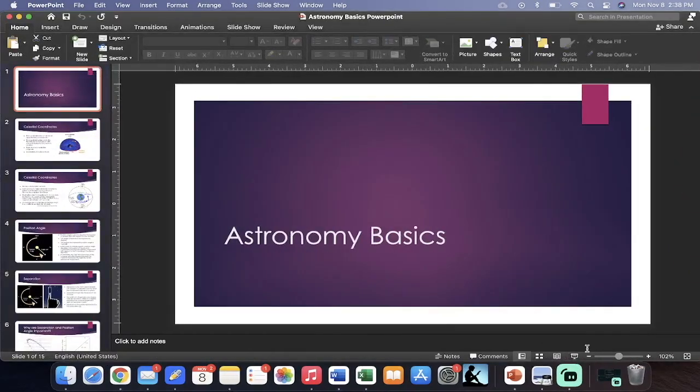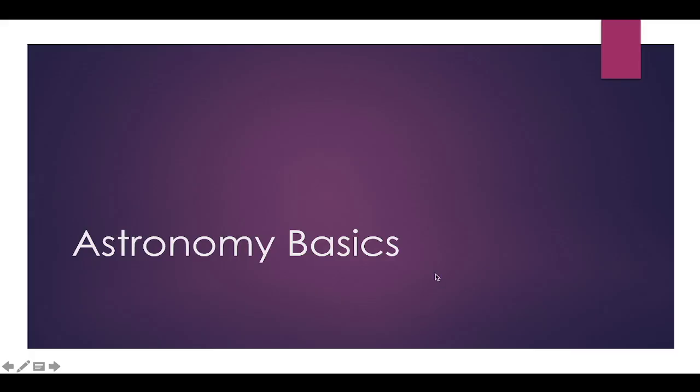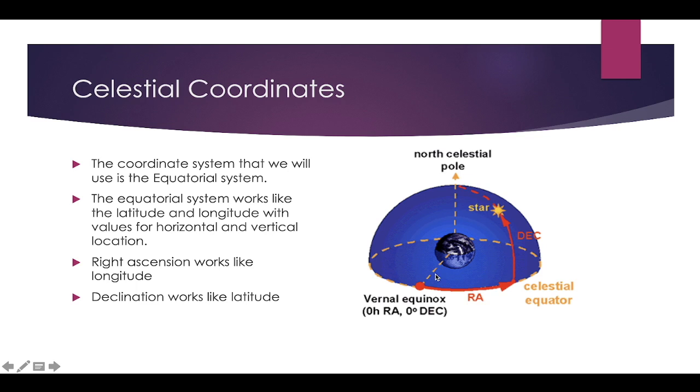All right, you guys, so today we're going to begin by talking about the basics of astronomy. The first thing we're going to talk about is how we know where a star is located in the night sky. To do that, we use what are called celestial coordinates, and the most common form of that is the equatorial system.